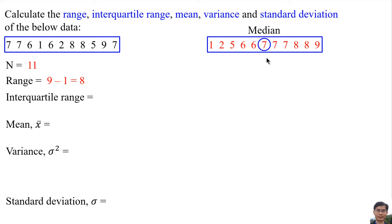Before the median there are five data. The middle of the five data is 5, so 5 is the first quartile. After the median there are five data. The middle of the five data is 8, so 8 is the third quartile. So the interquartile range is the third quartile minus the first quartile: 8 minus 5 is 3.